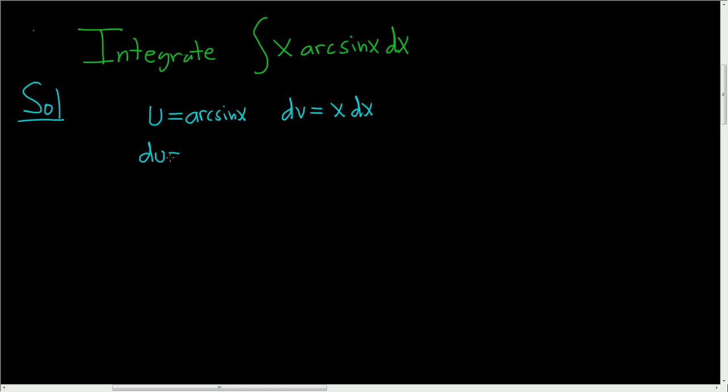Computing du, we end up with 1 over the square root of 1 minus x squared dx. And then just computing v, we get x squared over 2.